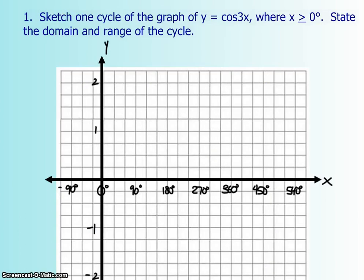Let's take a look at an example. So, sketch one cycle of the graph of y equals cos 3x, where you're going to start x at 0 degrees, and then you're going to go onwards for one cycle. You're going to also provide the domain and the range of that cycle. So what I've done already is I've set up the x and y axis, and we're just going to draw it now. So I'm going to draw the original cos first. Starts at 1, goes to 0, goes down to negative 1, goes back up to 0, and then all the way up to 1 again.